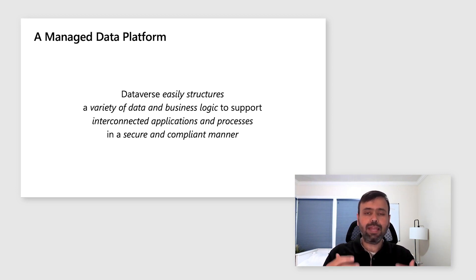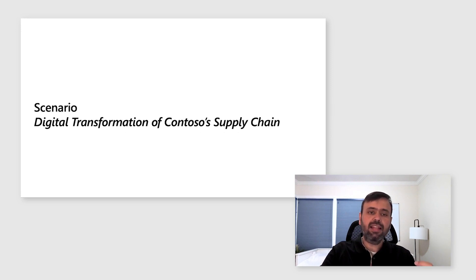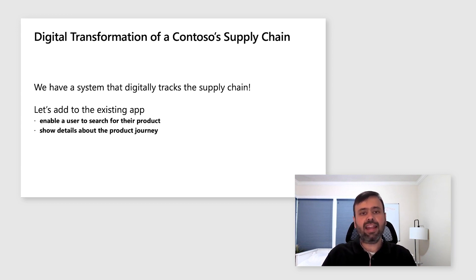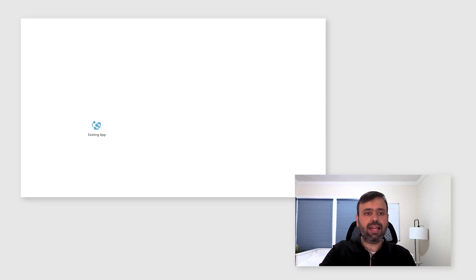Now, that is quite a mouthful, so let's start with a scenario. Today, let's think about digitally transforming Contoso's supply chain. Contoso has an existing supply chain system and wants to add new capabilities — specifically, search functionality within their application, and the ability to take records created by customers and show more details about them.